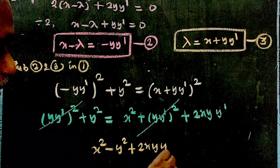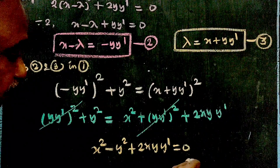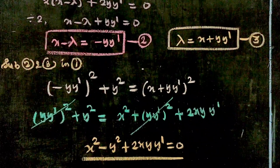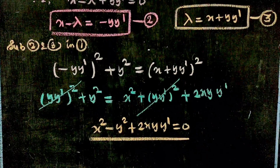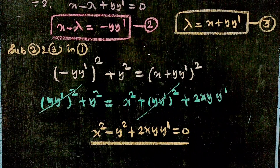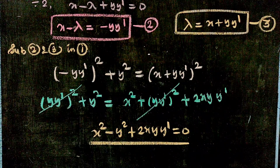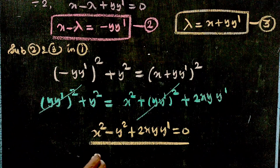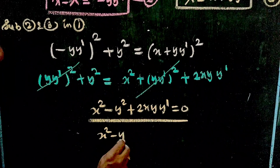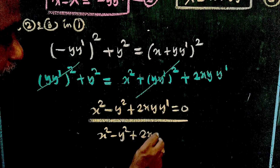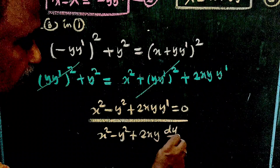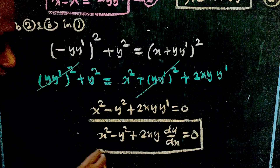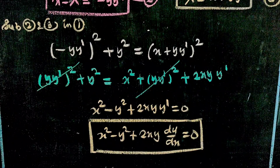After cancellation, we get y² = x² + 2x·y·y', which gives the final differential equation: y² - x² = 2xy·y', or equivalently 2xy·(dy/dx) + x² - y² = 0.